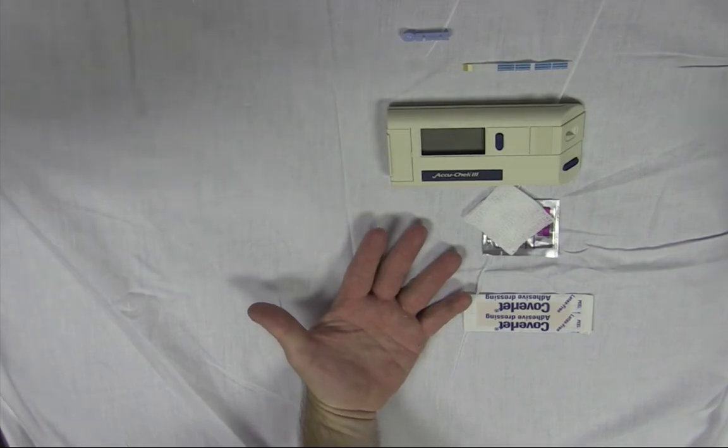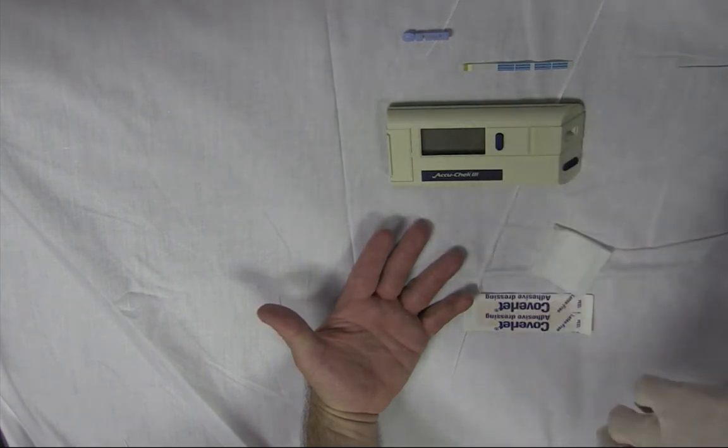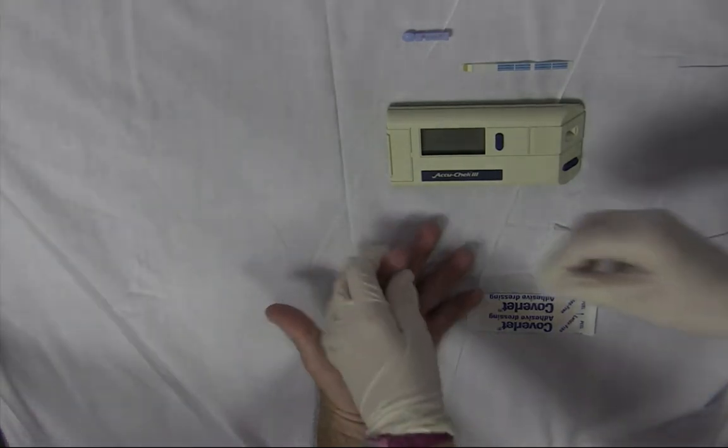When preparing to test your patient's blood sugar, you will apply a pair of clean gloves. The next step is to cleanse the site that you intend to puncture with an alcohol pad.